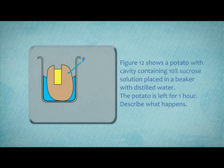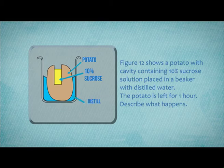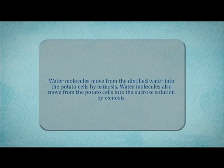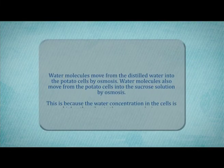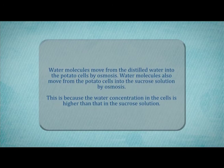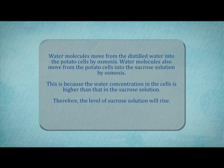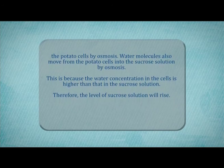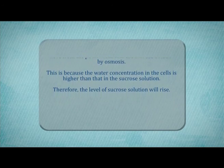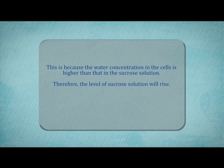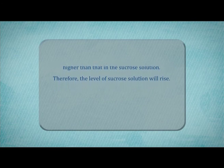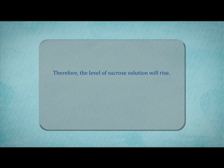Figure 12 shows a potato with a cavity containing 10% sucrose solution placed in a beaker with distilled water. The potato is left for one hour. Describe what happens. Water molecules move from the distilled water into the potato cells by osmosis. Water molecules also move from the potato cells into the sucrose solution by osmosis, because the water concentration in the cells is higher than that in the sucrose solution. Therefore, the level of sucrose solution will rise.